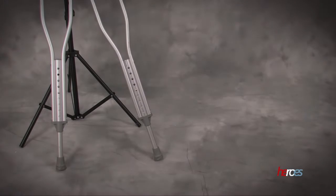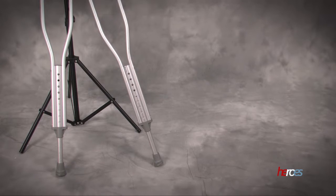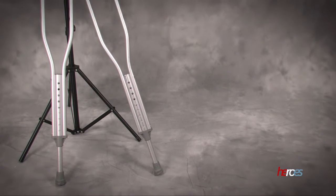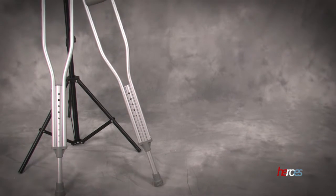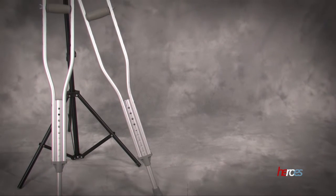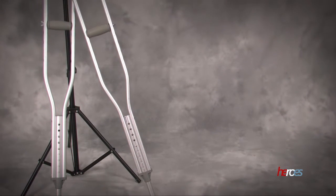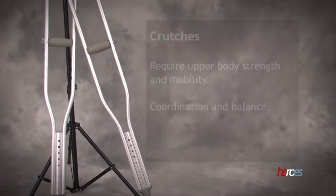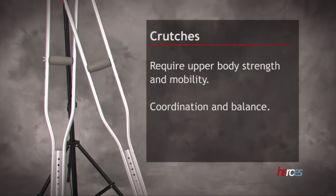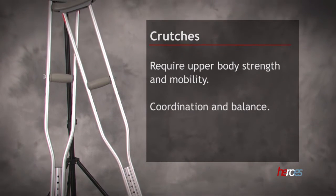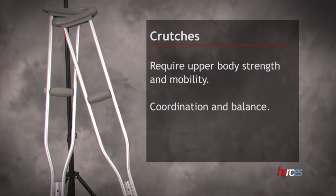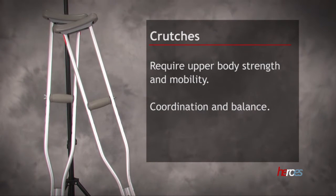Crutches are another common form of assistive device that are useful when an individual is unable to bear full weight on one leg. They require a fair amount of upper body strength and mobility, as well as coordination and balance.